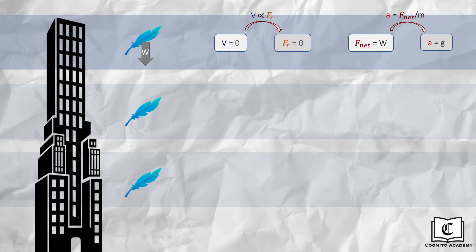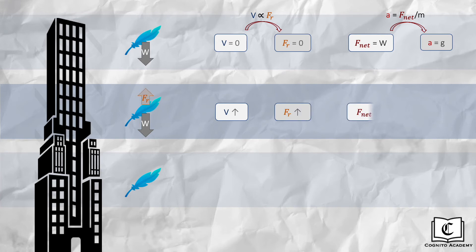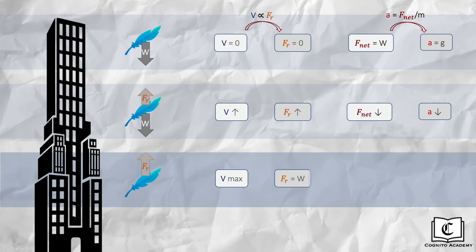The feather gains velocity, but the higher its velocity, the higher the air resistance, and we can see that the net force on the feather is actually decreasing due to this increasing air resistance. This results in a smaller acceleration, since acceleration is directly proportional to the net force. This feather will accelerate to a velocity where air resistance is equal to its weight, canceling each other out.